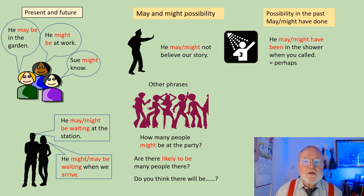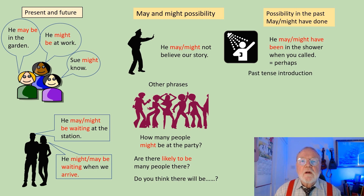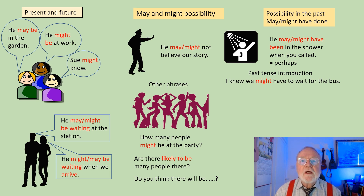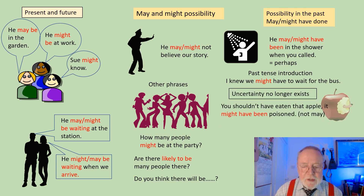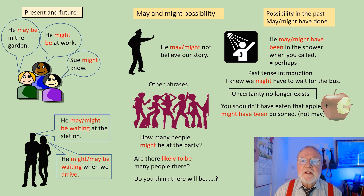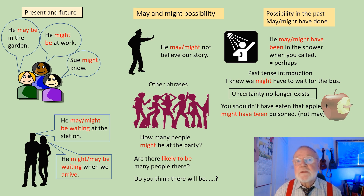There are some situations where we can't use may and might — we can only use might. Where a sentence is introduced by a past tense, like 'I knew' — 'knew' is past tense — we have to use might: I knew we might have to wait for the bus. And where uncertainty no longer exists, look at this sentence: you shouldn't have eaten that apple — it might have been poisoned. Can't use may here. If the apple had been poisoned, you probably would be dead, so it didn't happen. The apple was not poisoned. It might have been poisoned, but actually it wasn't.